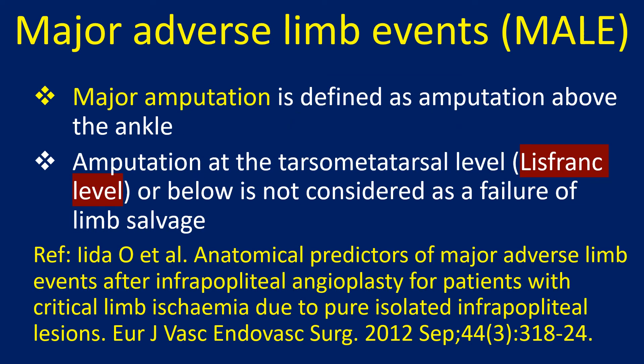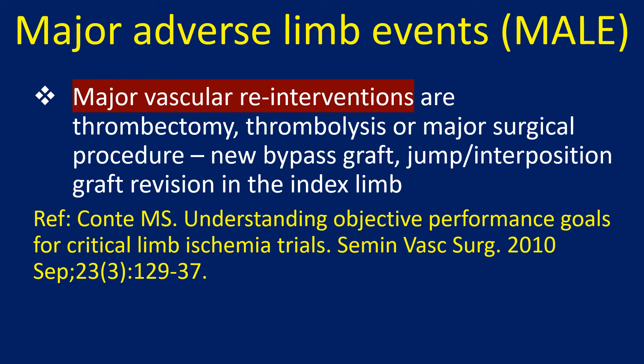Major amputation is defined as amputation above the ankle. Amputation at the tarsometatarsal level, Lisfranc level, or below is not considered a failure of limb salvage. Major vascular re-interventions include thrombectomy, thrombolysis, major surgical procedures, new bypass graft, jump or interposition graft revision in the index limb.